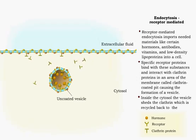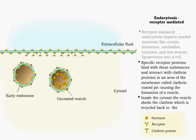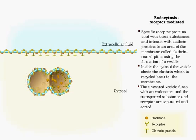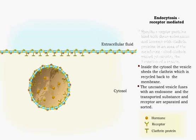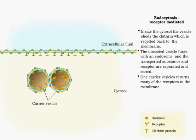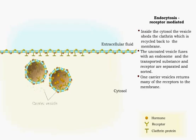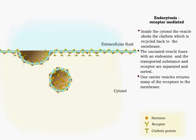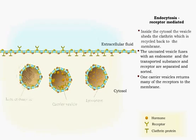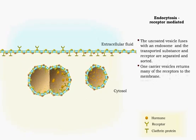The uncoated vesicle now fuses with a vesicle called an endosome, where the substance and the receptor are separated and sorted. Many of the receptors leave the endosome via a carrier vesicle and are returned to the plasma membrane. The ingested substance and some receptors are transported in carrier vesicles to a late endosome, which binds with a lysosome, where the substances are digested into usable products by the cell.